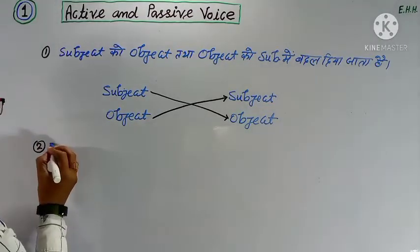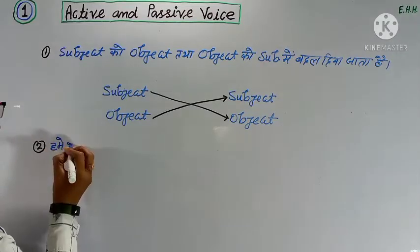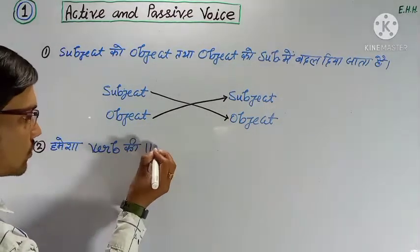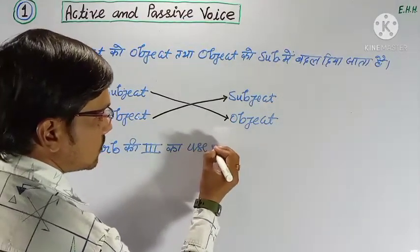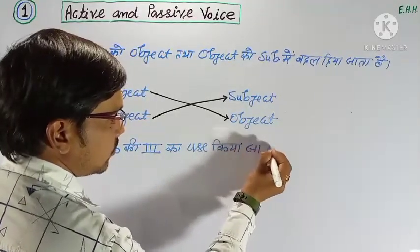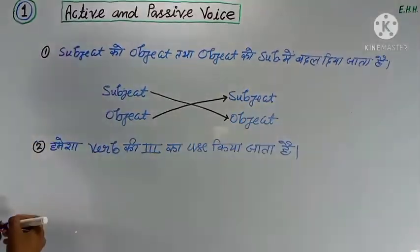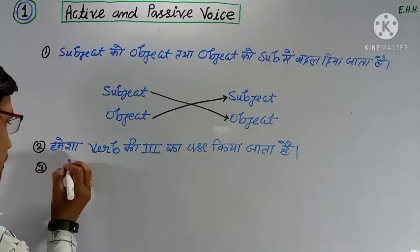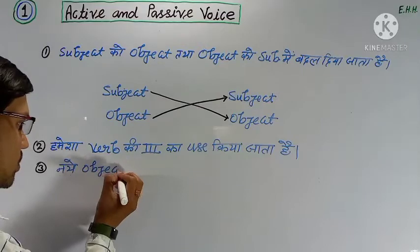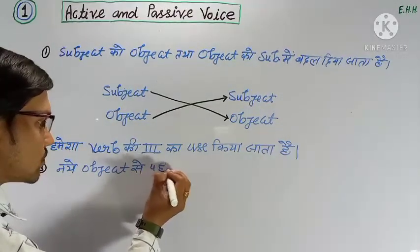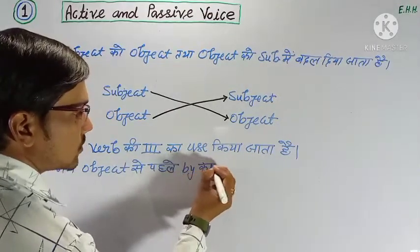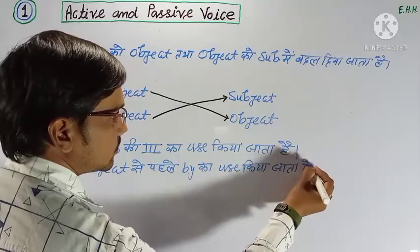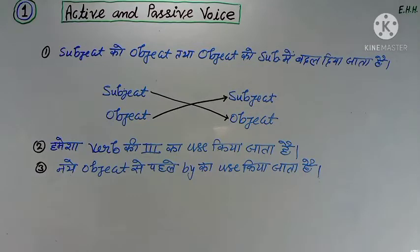Second rule: the third form of the verb is always used. Third rule: 'by' is always used before the new object.